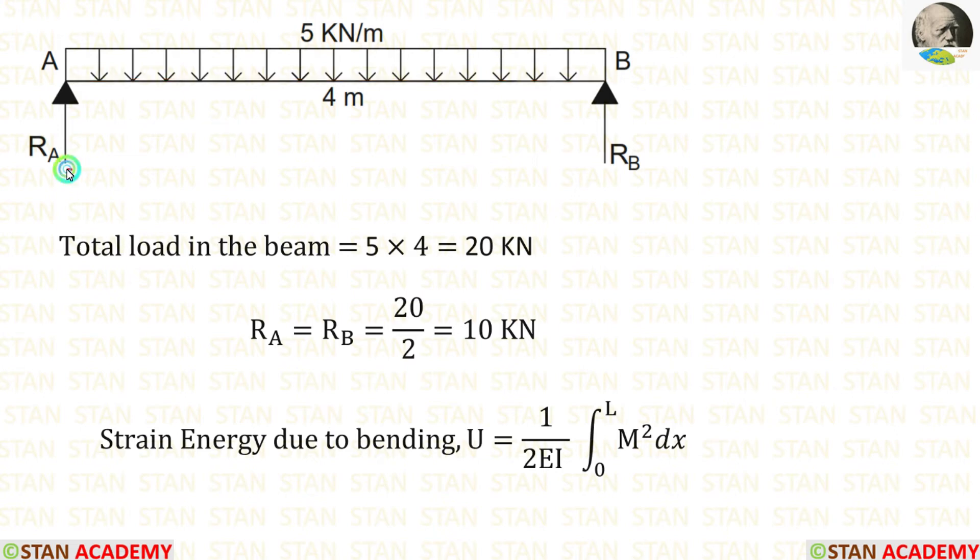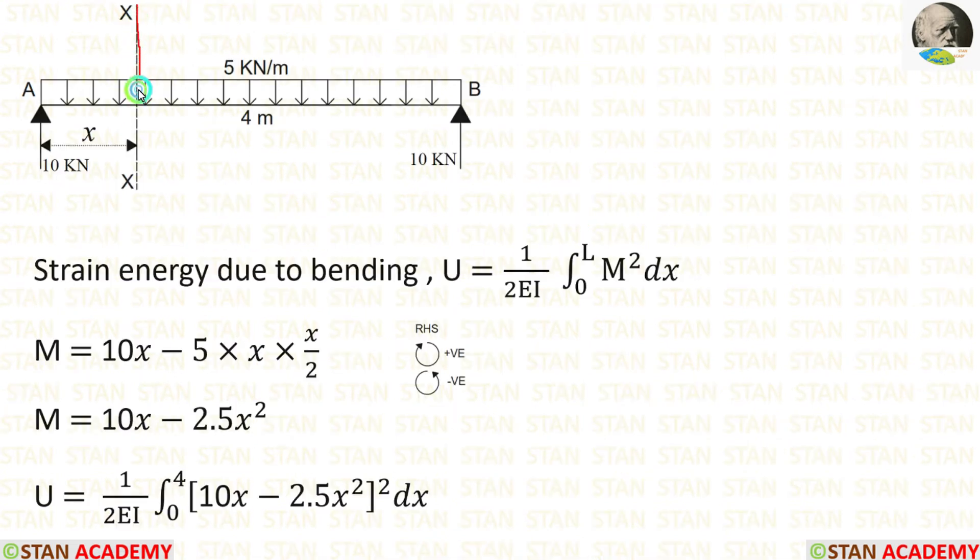The limits for the integration will be 0 to L. I have made the section randomly here at the distance of x from the point A. In this section, we have to calculate the moment. We have to calculate the moment from the point A. In this case, we are moving right-hand side. Clockwise will be positive. Anti-clockwise will be negative. The vertical reaction 10 kilo Newton is acting towards the section in the clockwise direction. So it will be positive. And the distance is x, so 10x. The UDL, 5 kilo Newton per meter, is acting in the anticlockwise direction towards the section. So it will be negative. When the UDL comes, we have to take the distance and distance by 2. So x into x by 2. Finally, we are getting M is equal to 10x minus 2.5x square.